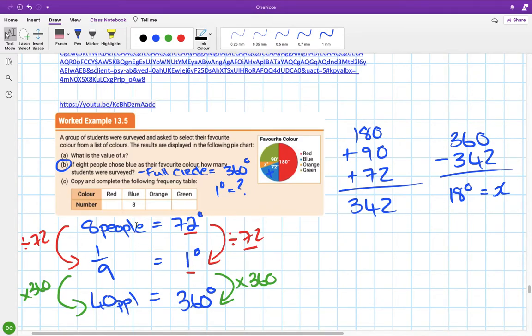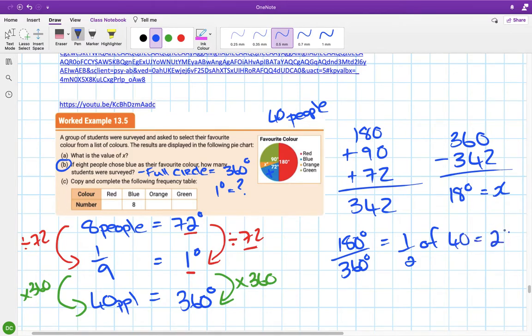Copy and complete the following frequency table. Red: Remember now that we know the entire circle corresponds to 40 people. 180 degrees out of 360 is half, and half of 40 people is 20 people. Blue is done. Orange - we got orange was 18 degrees.